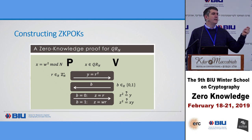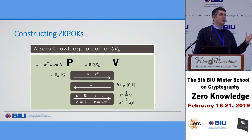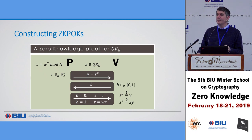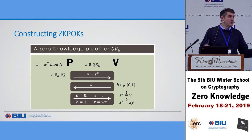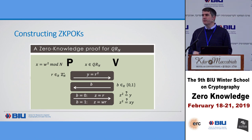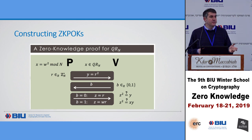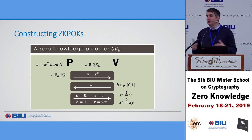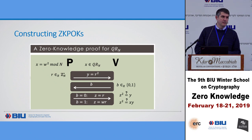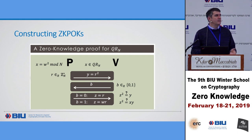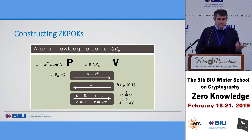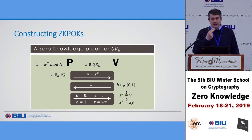There are also natural examples — some constant-round zero knowledge proofs that we do not believe are proofs of knowledge. We have no idea how to construct an extractor; we conjecture they don't exist, though we don't have a proof. Here's the proof you saw for quadratic residuosity: we have some x which is a quadratic residue, and the prover wants to prove that x is indeed a quadratic residue.